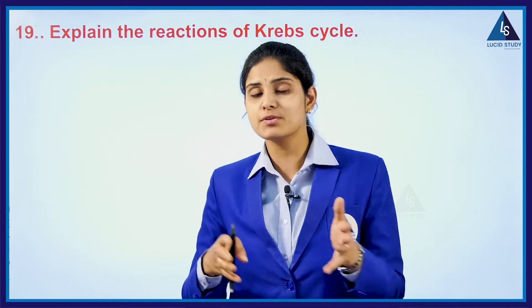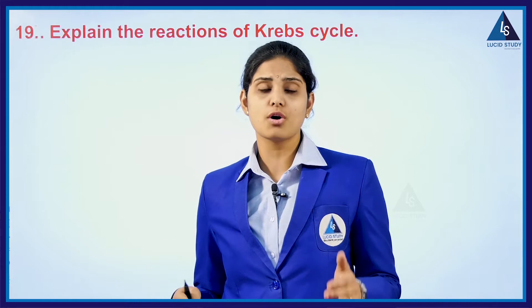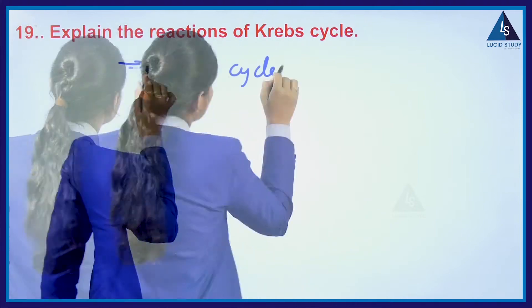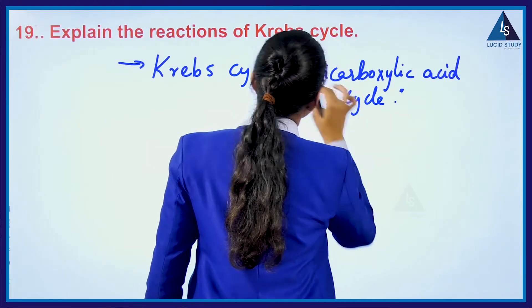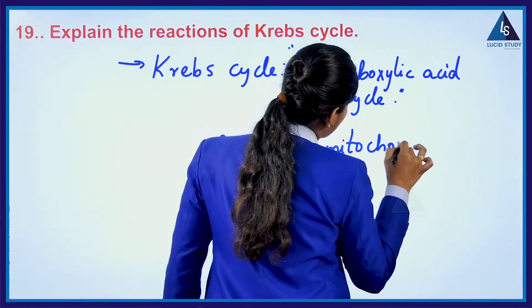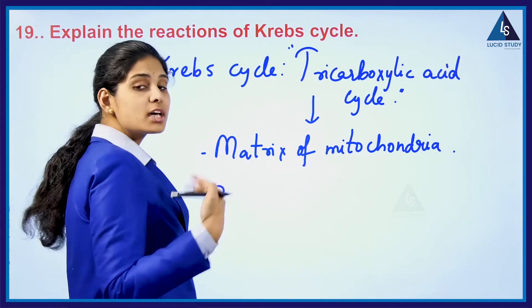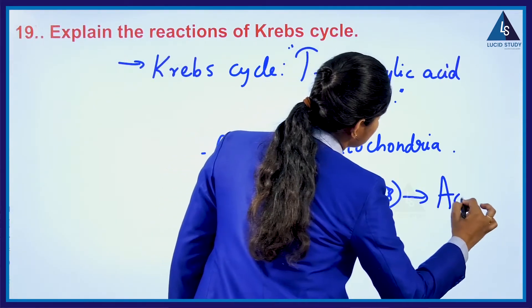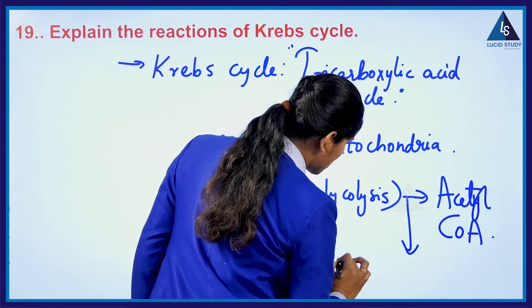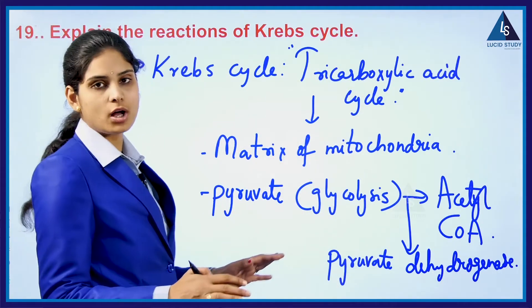The pyruvate formed from glycolysis is converted into acetyl-CoA in the presence of the enzyme pyruvate dehydrogenase. So this is the basic concept of Krebs cycle.